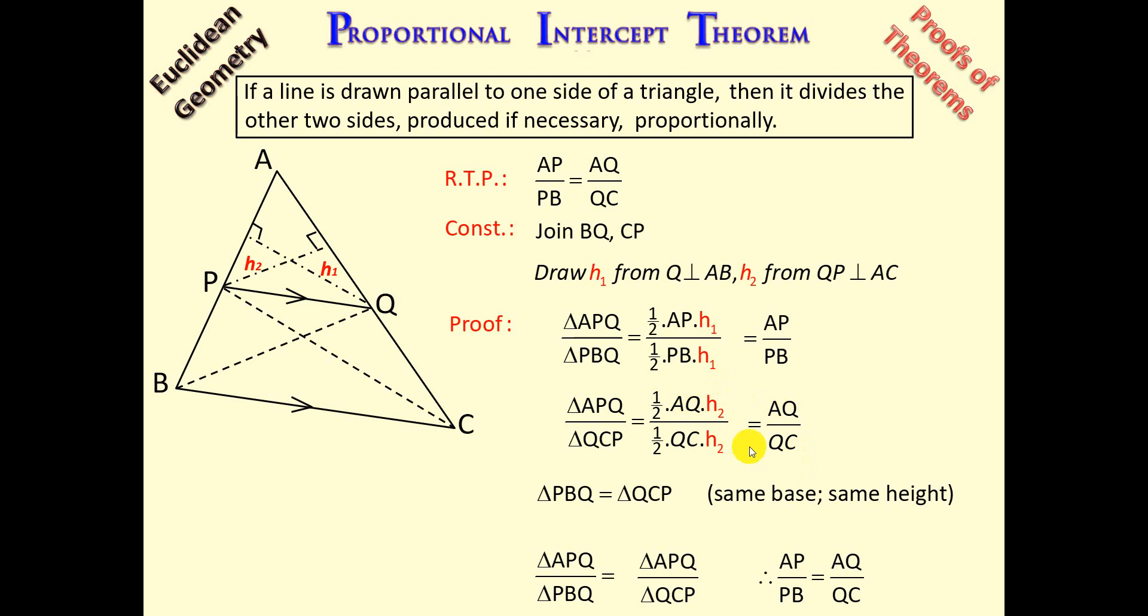When we're using this proof as a reason, we can state 'prop theorem' and name the parallel lines. In this case, PQ is parallel to BC. So when you use this as a reason, this is our reference.